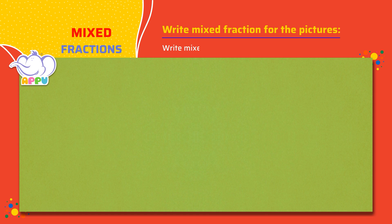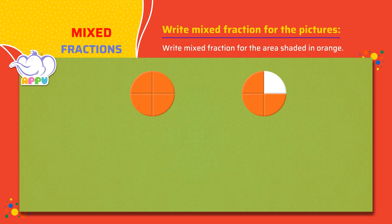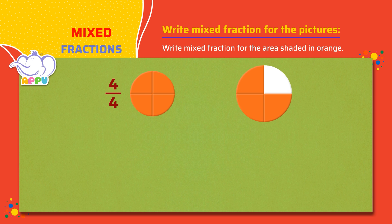Write mixed fraction for the area shaded in orange. The first area shaded in orange is 4/4, and the second area shaded in orange is 3/4.